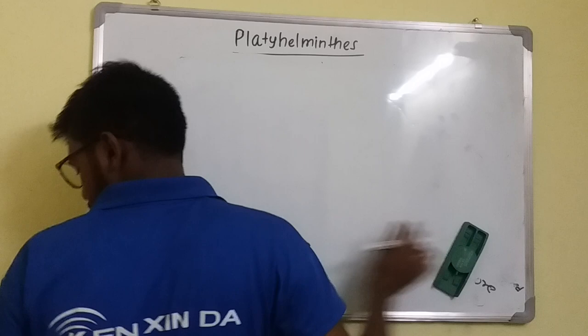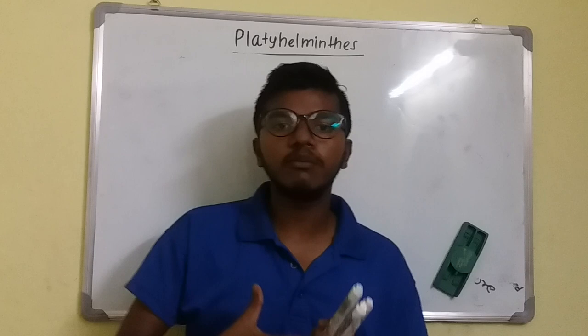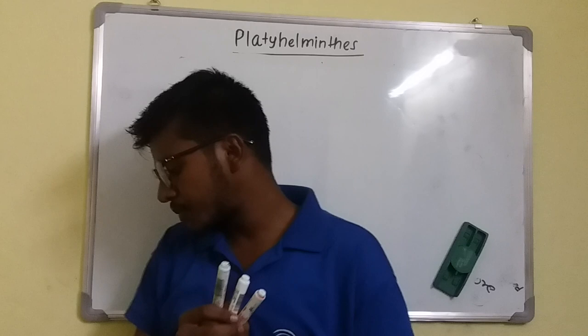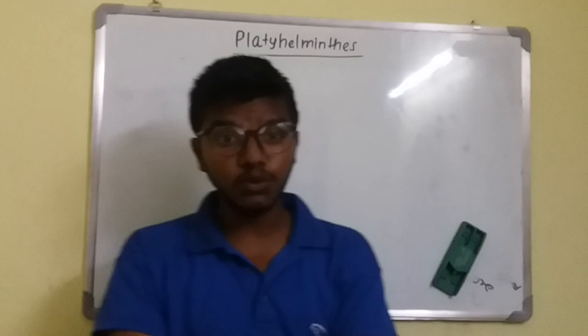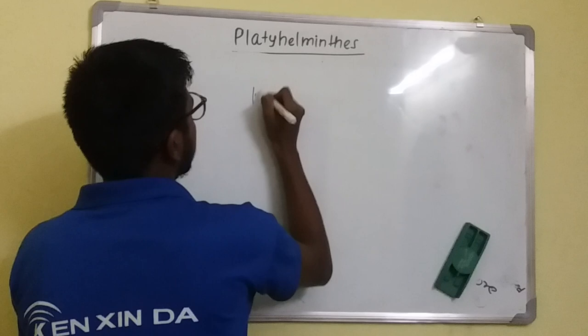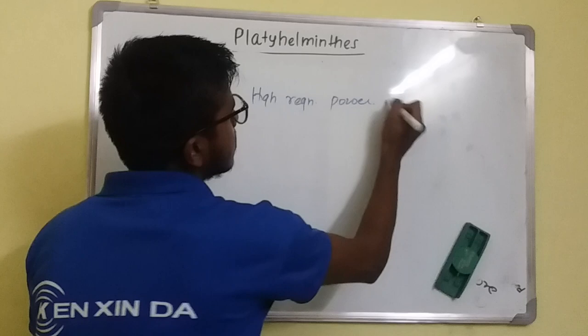As many Platyhelminthes are parasites, they need to regenerate in large numbers. Their bodies have a high level of regeneration power — the whole body can develop from any part that is cut out. This is a form of asexual reproduction.